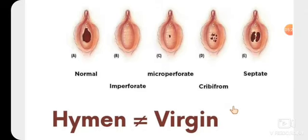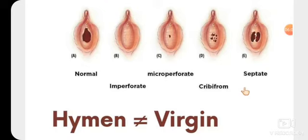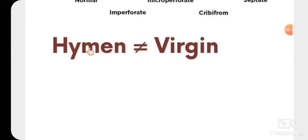We should know the types of hymen. There are a number of types depending on the structure or by which the opening of the hymen is formed. Different structures form different types of hymen. Sometimes there is a micro-perforate hymen with a very small opening. We must understand that hymen is not equal to virginity — hymen being intact or torn does not definitively prove or disprove virginity.